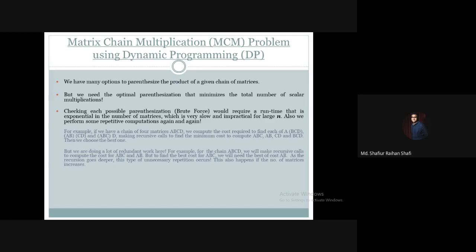For example, if we have a chain of four matrices A, B, C, D, we compute the cost required to find each of A(BCD), (AB)(CD), and make recursive calls to find the minimum cost to compare A, B, C, D and B, C, D. Then we choose the best one.